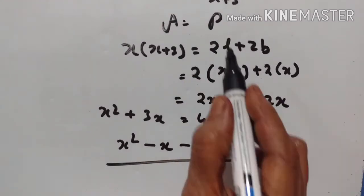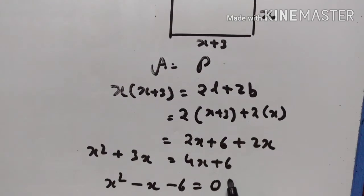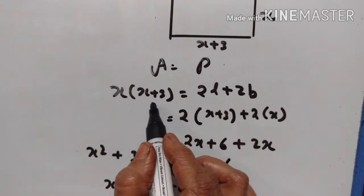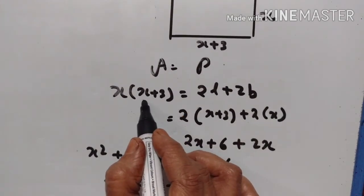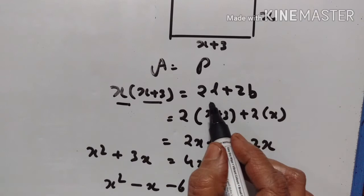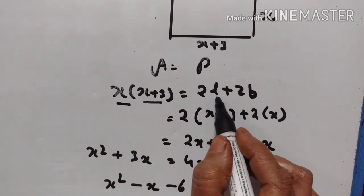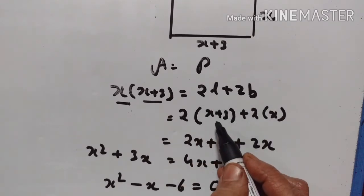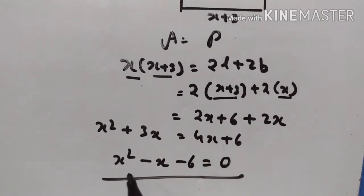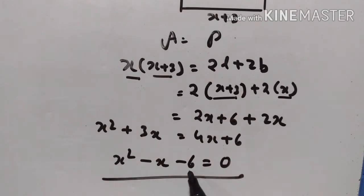Area is equal to perimeter. Area is equal to length into breadth, and perimeter is equal to 2L plus 2B. So we get the equation x squared minus x minus 6 is equal to 0.